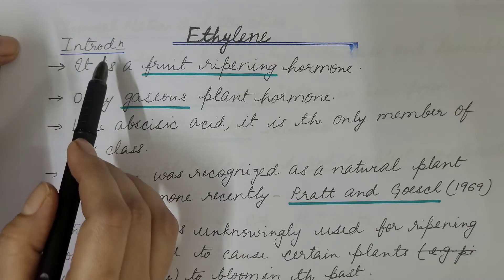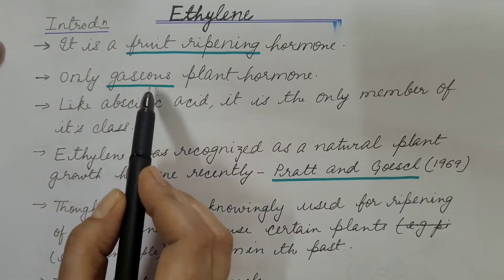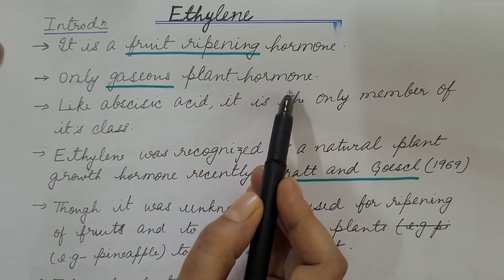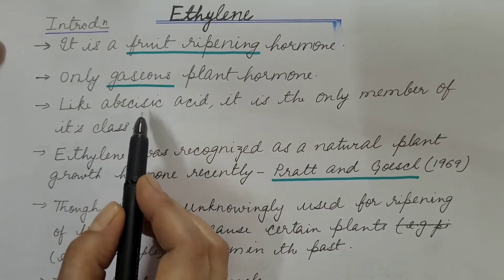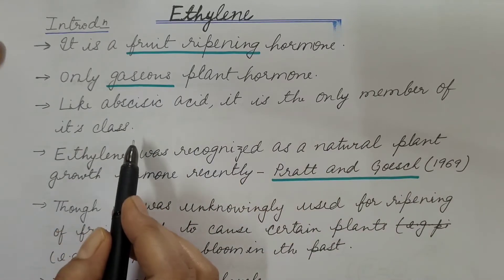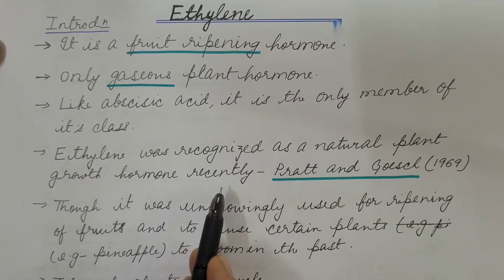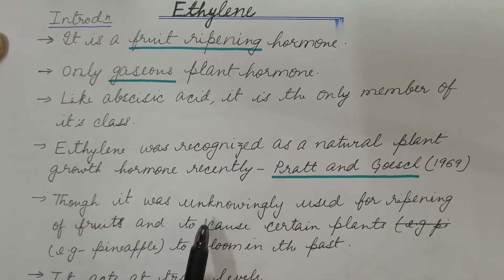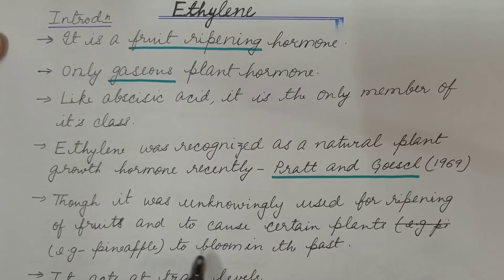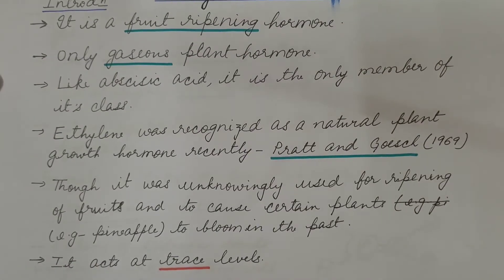Let us start with the introduction of ethylene. It is a fruit ripening hormone and the only gaseous plant hormone — the only plant hormone present in gaseous form. Like abscisic acid, it is the only member of its class. Ethylene was recognized as a natural plant growth hormone by Pratt and Gauche in 1969, though it was unknowingly used for ripening of fruits and to cause certain plants to bloom in the past — for example, pineapple. It acts at trace levels, meaning it is required only in small amounts.